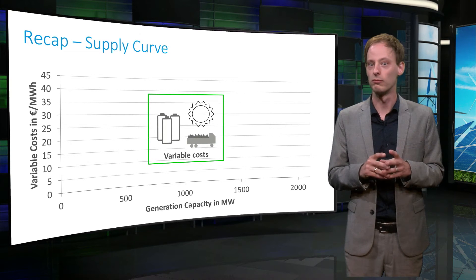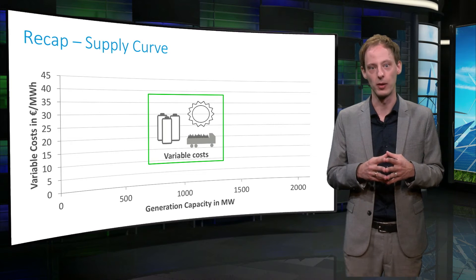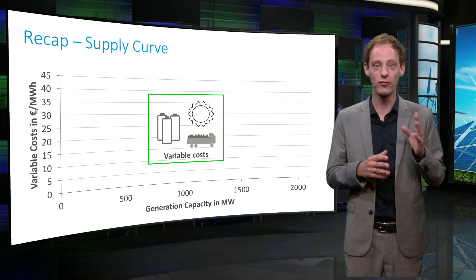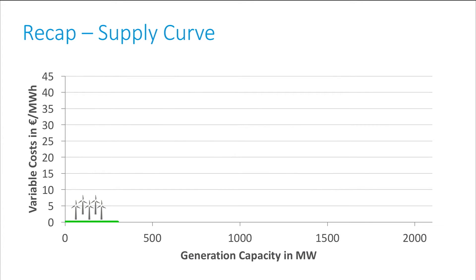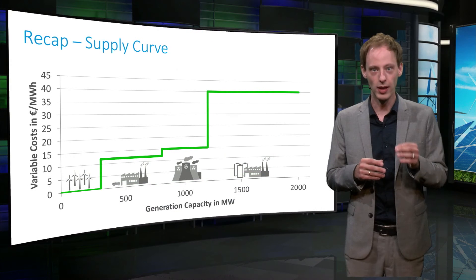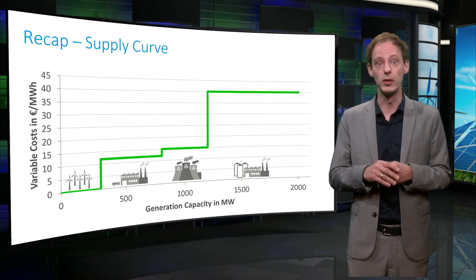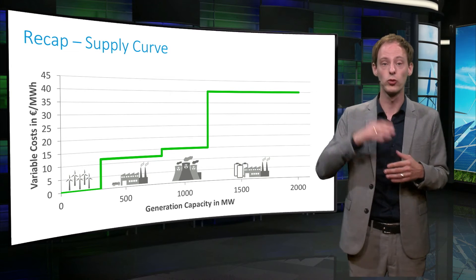Let's consider four example plants: a wind farm, a coal plant, a nuclear plant, and a gas plant. The wind farm has virtually no variable cost — the wind blows for free. Coal and nuclear have fuel costs that are relatively cheap, let's say 12 euros and 15 euros respectively. The gas plant has the highest variable cost — gas is expensive, let's say 40 euros. So if they bid their electricity at variable cost in a power exchange, they would be ranked from the lowest to the highest variable cost.